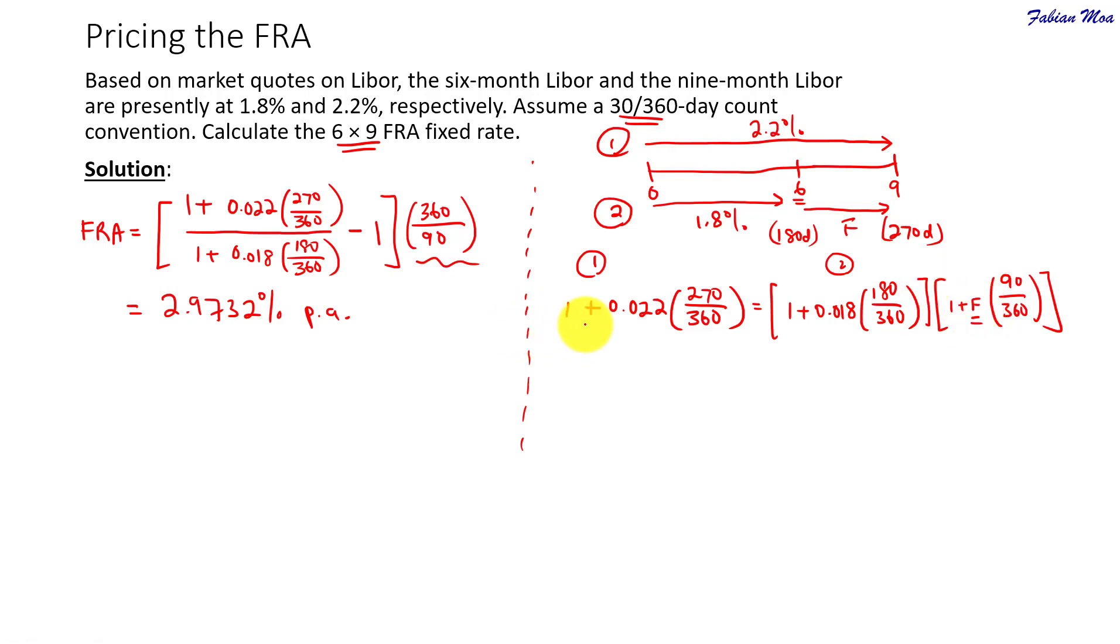So, on the left-hand side, okay, if you calculate this for 1 plus 2.2% times 270 over 360, you will get 1.0165. Then for the second part here, for the 6 months LIBOR.